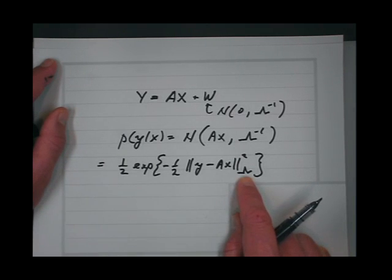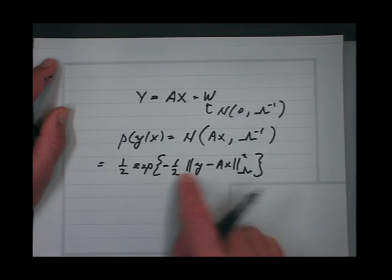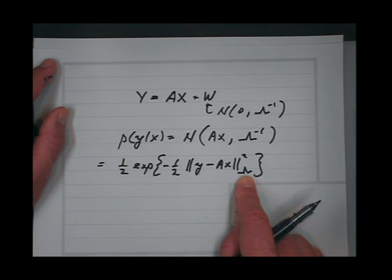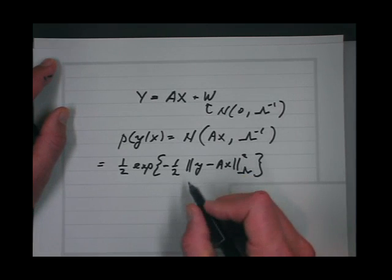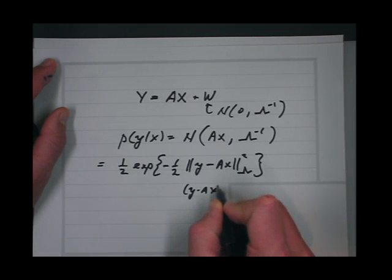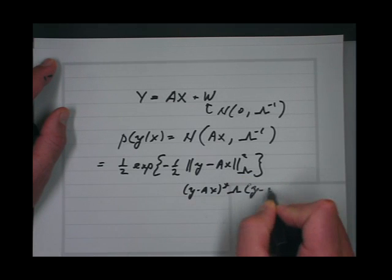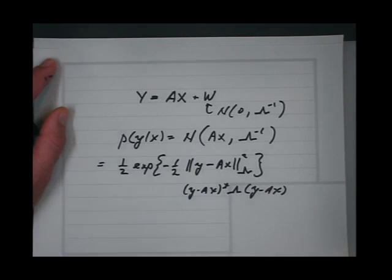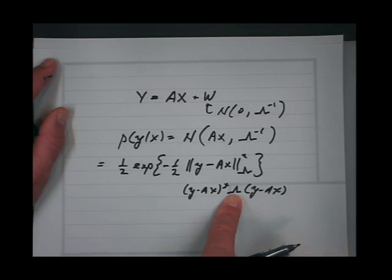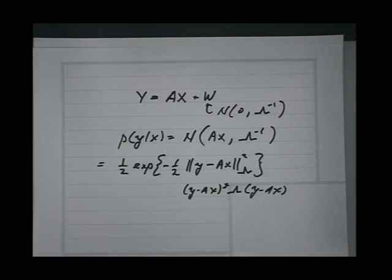This notation — if I put a norm and subscript it with a matrix that is positive definite — means it's equivalent to y minus Ax transpose lambda y minus Ax. So it's just a quadratic form where the positive definite matrix lambda is the matrix in the quadratic.